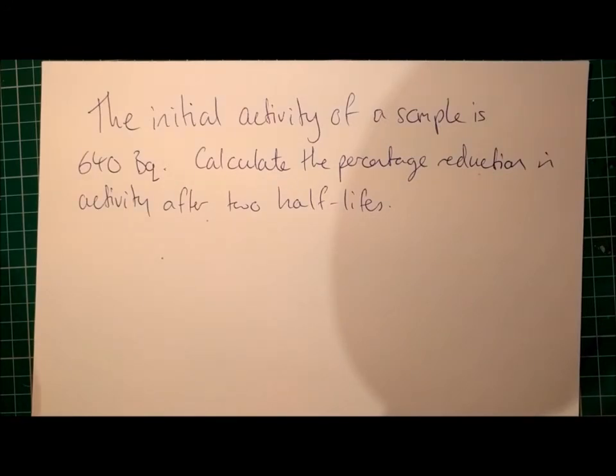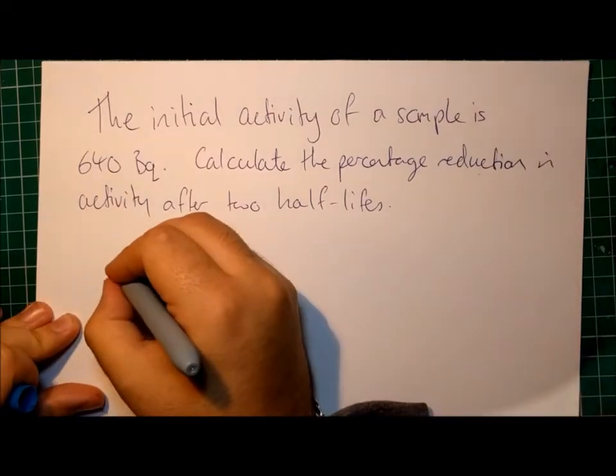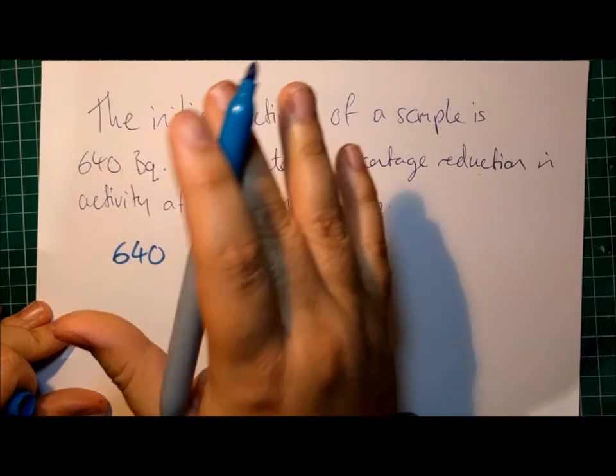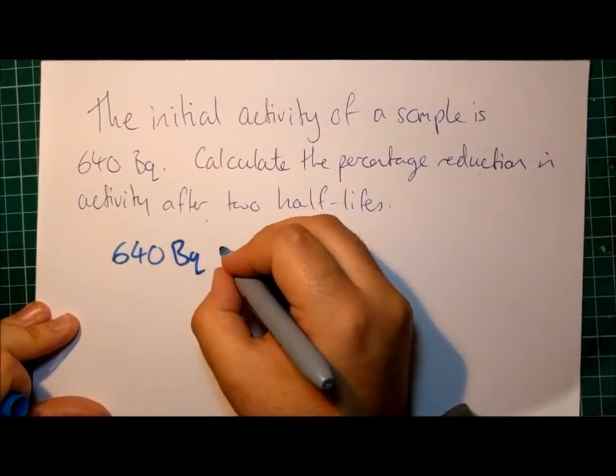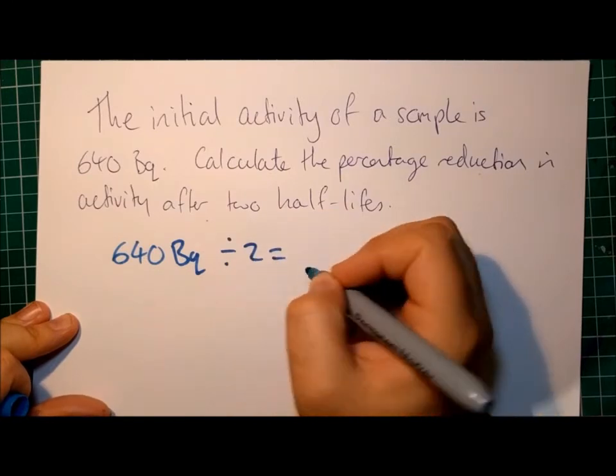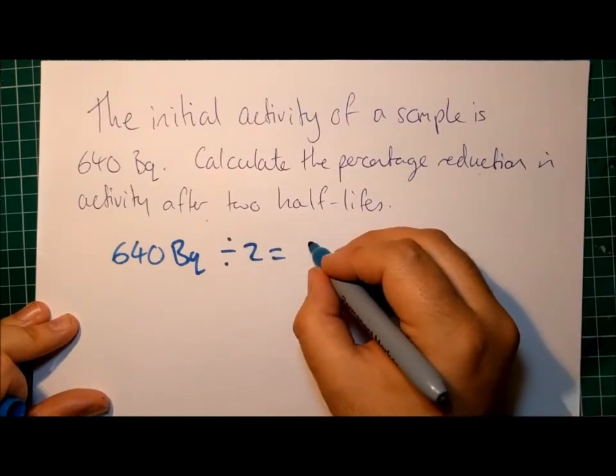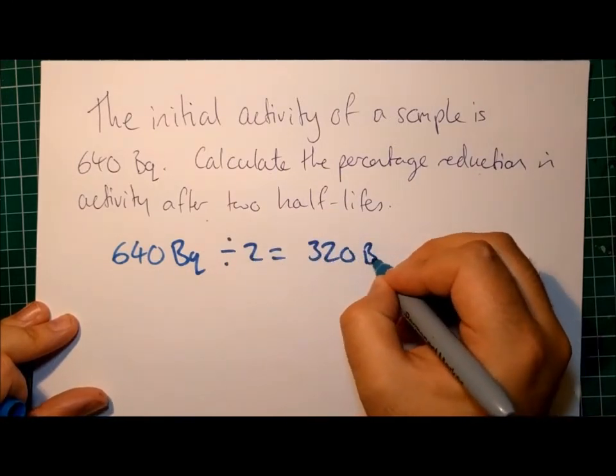Well, very similar to the previous question, we can say that if it had an activity of 640 becquerels, then you divide that by 2, and we know that after one half-life, that will give us 320 becquerels.